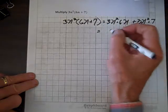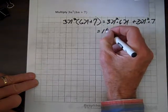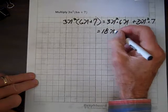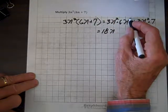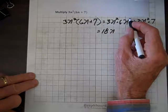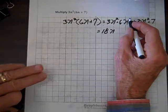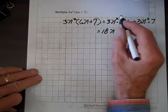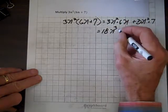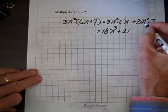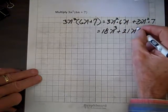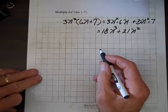well, 3 times 6 is 18, and n, and now we'll add exponents, and the exponent here is 1. It's understood. That's why you don't see it. So 1 plus 2 is 3, plus 7 times 3 is 21, and we have an n squared, and we're done with that one.